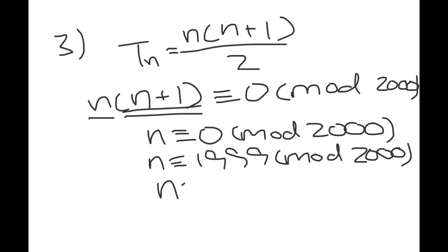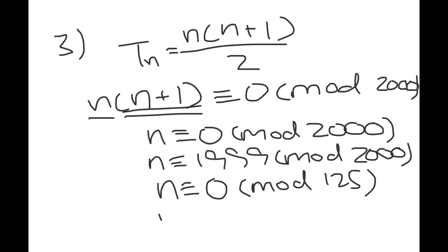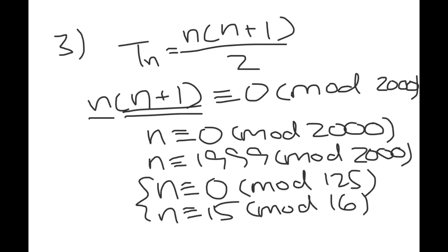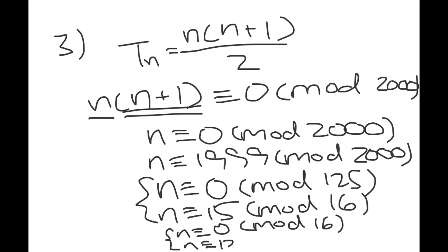So we want either: n ≡ 0 mod 125 and n ≡ 15 mod 16 (since n+1 ≡ 0 mod 16), or n ≡ 0 mod 16 and n ≡ 124 (i.e., −1) mod 125. From here it's not too hard to use the Chinese Remainder Theorem to find what n is equivalent to mod 2000 in each case.